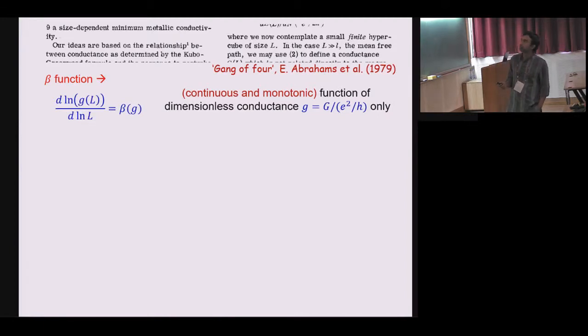So what was supposed to show was this title of this famous paper by Gang of Four. Essentially one of the understanding of this phenomena came from very powerful and simple idea of scaling theory of localization. The main statement was that if you look into some dimensionless conductance and see how it changes as function of system size, the logarithmic derivative only depends on conductance.